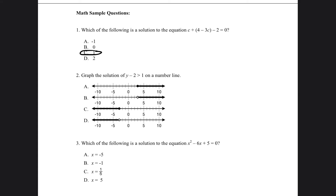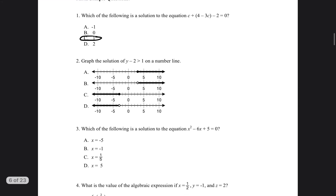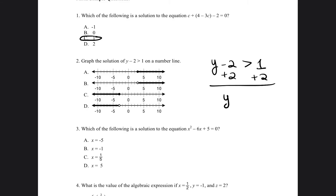So we're going to go ahead and go to the next problem. It says graph the solution of y minus 2 is greater than 1 on our number line. So y minus 2 is greater than 1. I want the y to be by itself, so I'm going to add 2 to both sides. So now it says y is greater than 3.